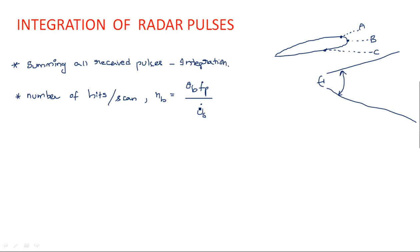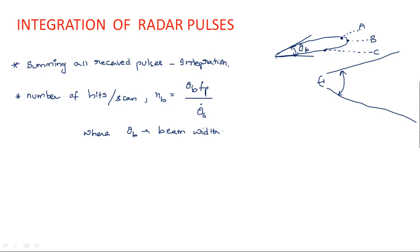In the formula n_b = θ_b × f_p / θ_s, θ_b is the beamwidth. Because of the beamwidth, the number of targets can be covered. The beamwidth is the angle between the two half-power points of any beam, and it is denoted θ_b.